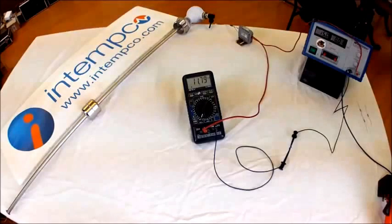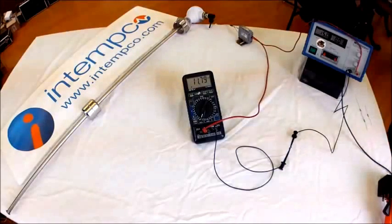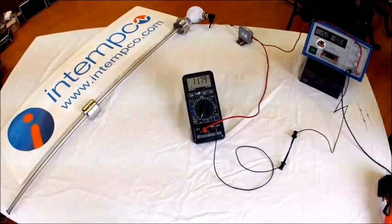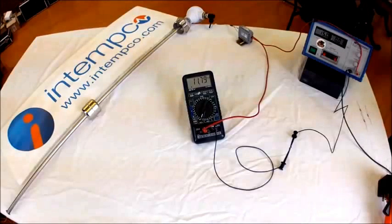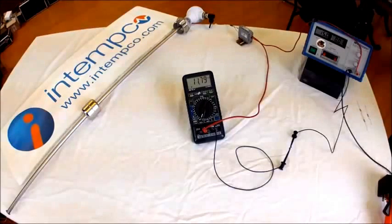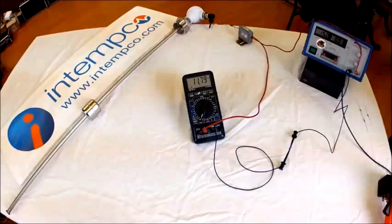I'll repeat this because it's important. The processor uses some current from the current loop in order to function. This current is below the 4 milliamp level, so it does not interfere with the measurement signal.